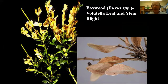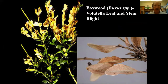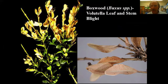Boxwoods have many different problems. The most common is volutella leaf and stem blight, which is very common here. The necrotic leaves often stay on the stems and have a pinkish coloration. The sporulation of the fungus occurs on the underside of the leaves and you can see that pink coloration in the image.